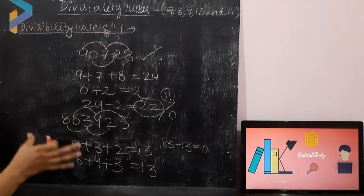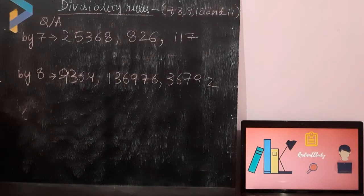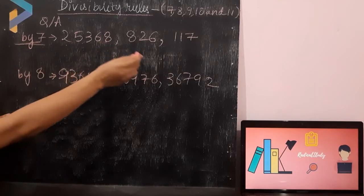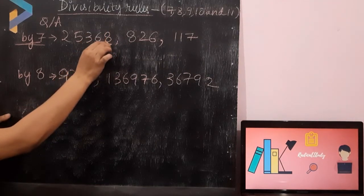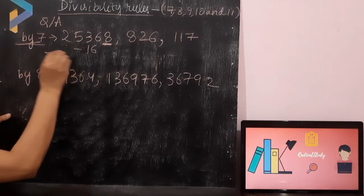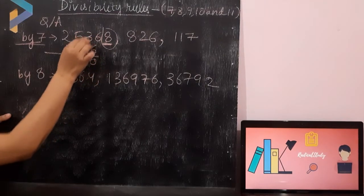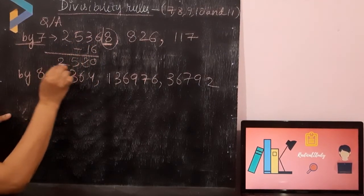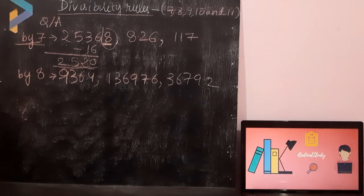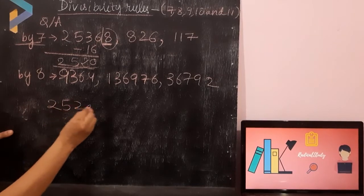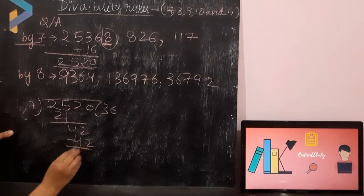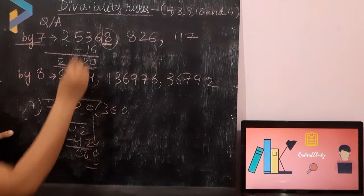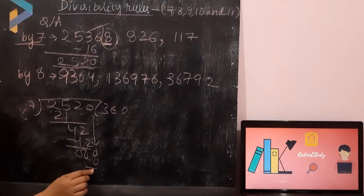Now I am going to take some examples as questions to check your understanding. We will check divisibility by 7. As per the rule of 7, double the unit digit: 2 times 8 is 16. Subtract 16 from the rest of the number: 6 minus 6 is 0, 3 minus 1 is 2 — giving 2520. We check whether 2520 is divisible by 7. Yes, it is divisible by 7 because the remainder is 0.